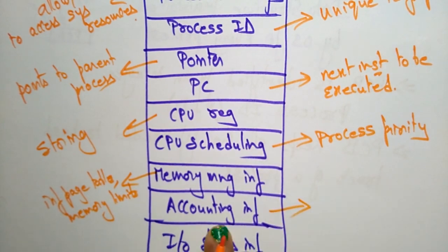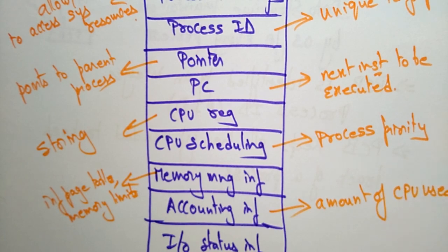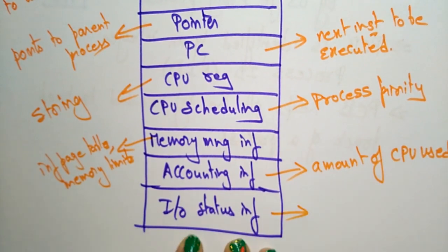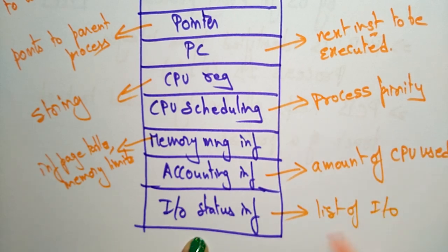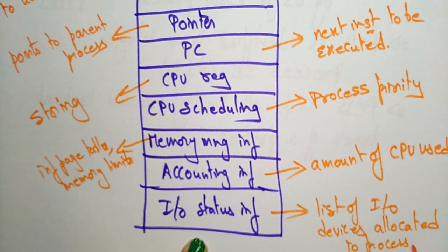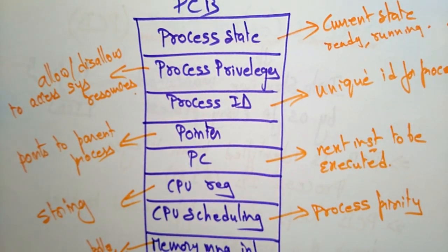Accounting information includes the amount of CPU used for process execution, time limits, execution ID, etc. I/O status information includes the list of I/O devices allocated to the process. This is what the Process Control Block stores about each process that is going to be executed.